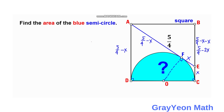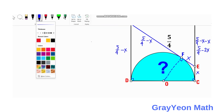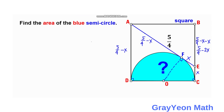Next, we label segment AB, which is the side of the square and therefore the same length as AD. So AB is also 5/4 minus X.